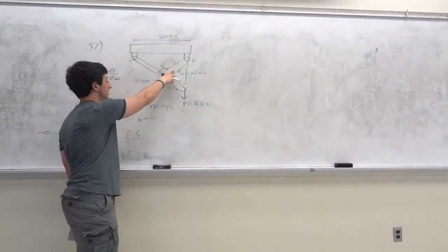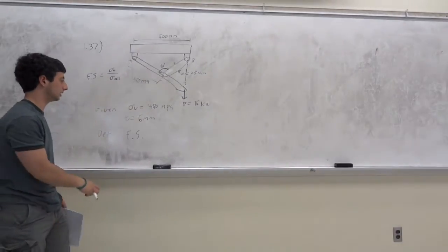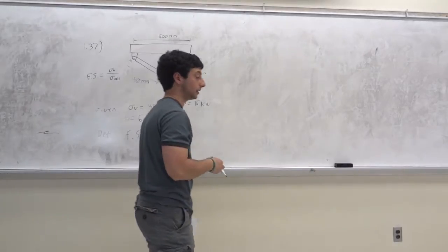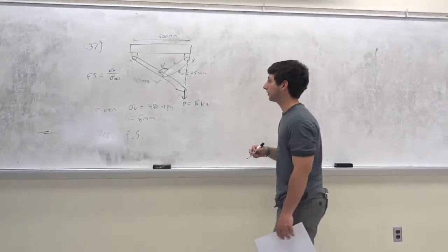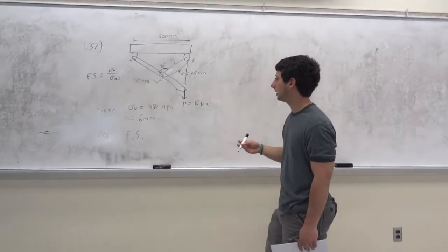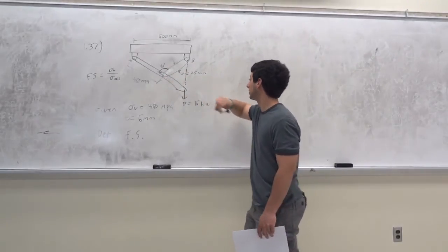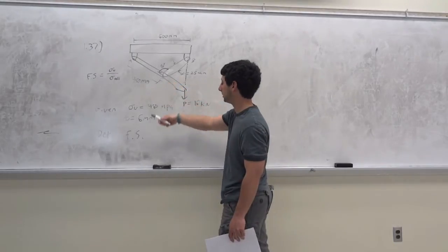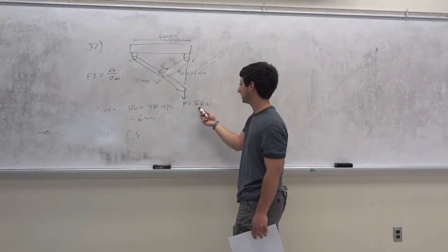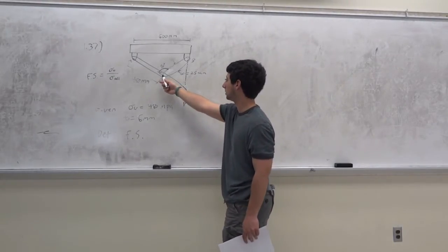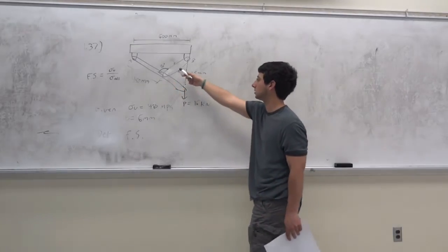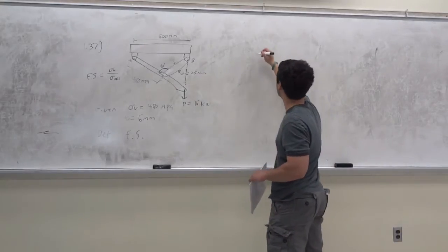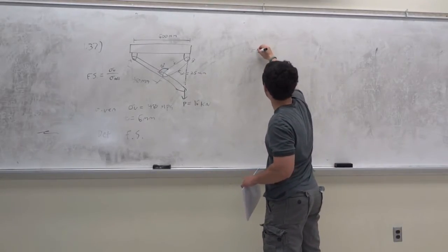We have to find the allowable stress in this member and then we can find the factor of safety given these parameters. First we're going to have to draw a free body diagram of this whole thing, because we want to know what kind of force you're going to get over here — they give you P equal to 16 kilonewtons. Once you know the force, you can get the stress, the allowable stress, and then find the factor of safety.